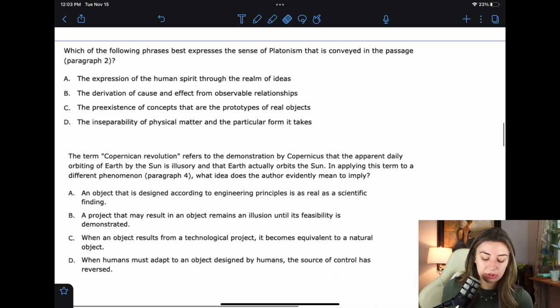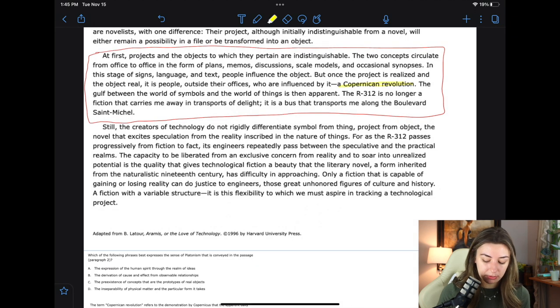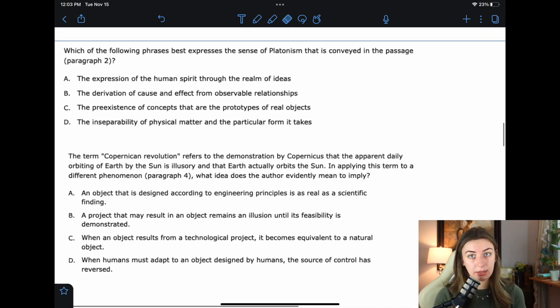The term Copernican revolution refers to the demonstration by Copernicus that the apparent daily orbiting of Earth by the Sun is illusory and that Earth actually orbits the Sun. In applying this term to a different phenomenon in paragraph four, what idea does the author evidently mean to imply? So again, I want to go back to paragraph four because it specifically mentioned it, but I'm not going to spend more than ten seconds here. This is where they mentioned Copernican revolution, and it was when they were talking about how an object is influenced by people, but then it switches and it starts influencing people after it's made. So the question's basically asking, what does the author mean by that? The Copernican revolution was saying the Sun revolves around the Earth, but then Copernicus was like, no, it's this complete reversal.